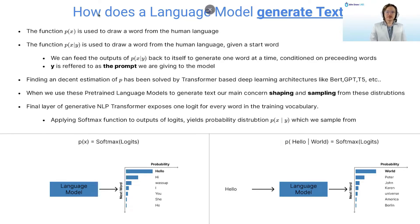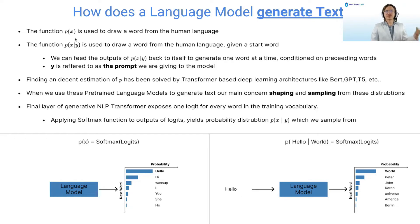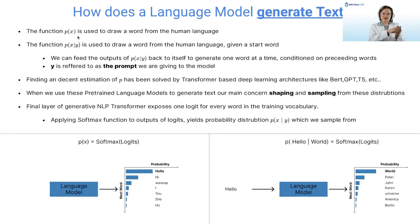Finding and creating this probability distribution P has been solved by large language models, and they are what we are using today to perform these tasks. Our main concern is shaping and sampling from these distributions.